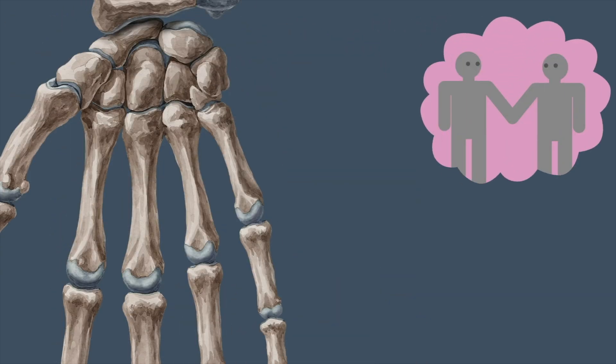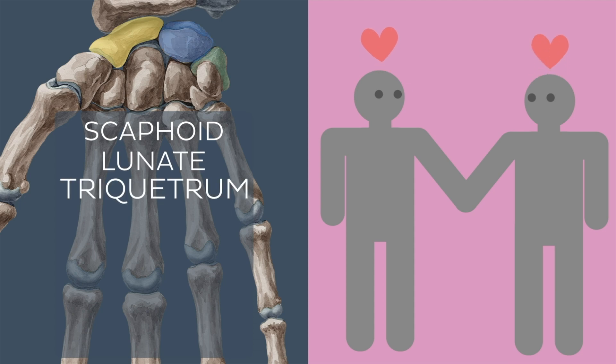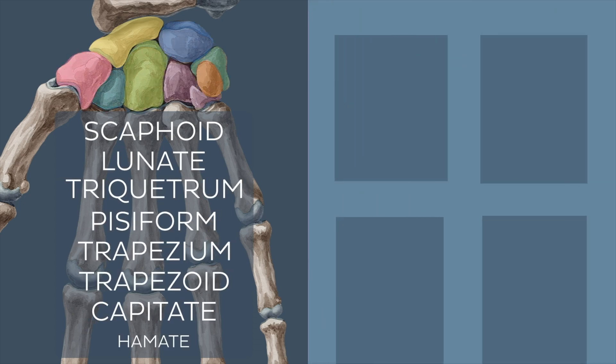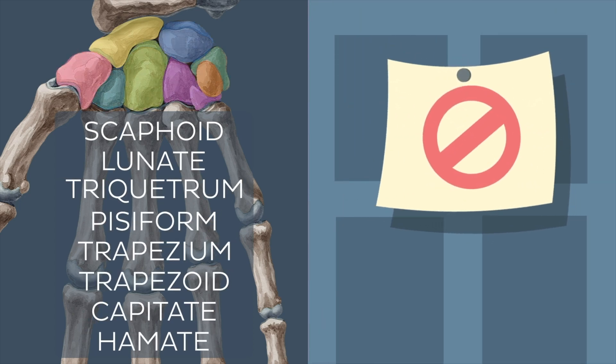Or if you are feeling naughty, you can use something like 'Some lovers try positions that they can't handle' to remember the carpal bones. Create your own mnemonics by forming acronyms, rhymes, or vivid images related to anatomical terms. By converting complex information into simple, memorable chunks, mnemonics enhance recall and make studying more efficient and enjoyable.